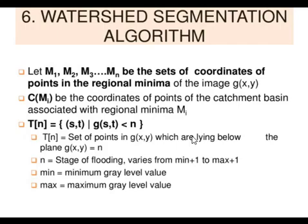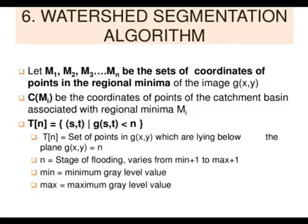T of n is the set where T(n) equals s(t) where g(s,t) is less than n. T of n are points which lie below the plane g(x,y). N is the stage of flooding where we have excessive water. The stage of flooding varies from minimum plus one to maximum plus one. Minimum and maximum are the gray levels, respective gray levels.